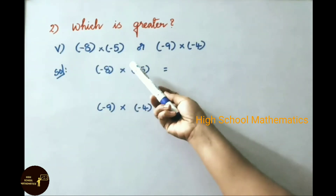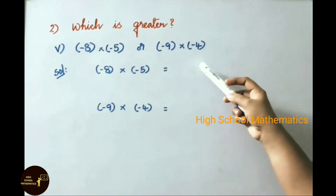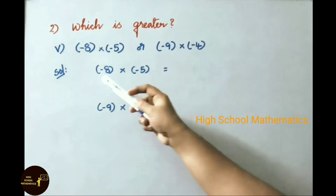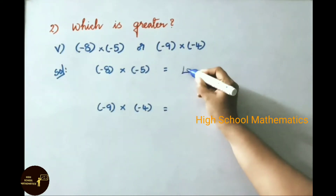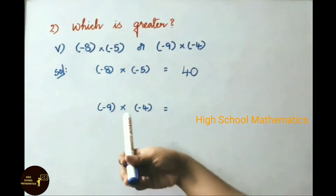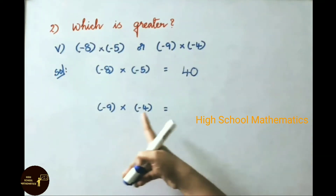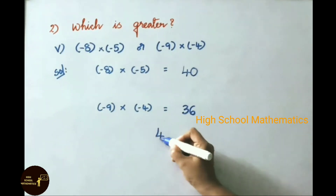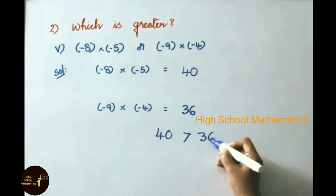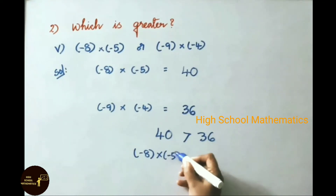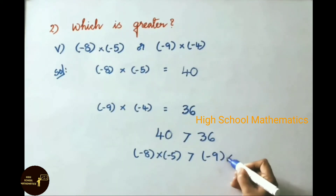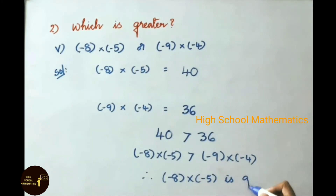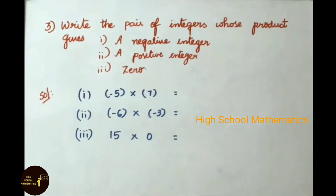Fifth sum: minus 8 into minus 5, or minus 9 into minus 4, which is greater? Minus 8 into minus 5 — minus into minus gives plus, 8 fives are 40. Minus 9 into minus 4 — minus into minus gives plus, 9 fours are 36. So 40 is greater than 36. Therefore, minus 8 into minus 5 is greater.